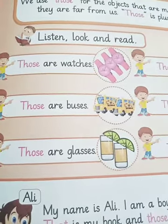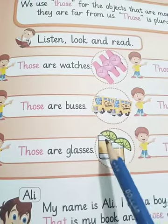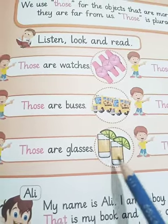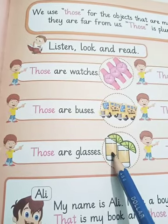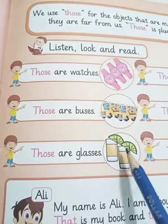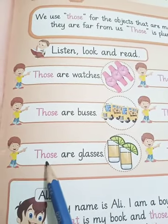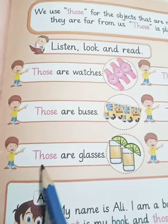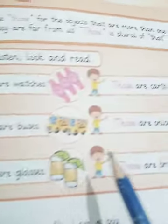Now see which picture is this — glasses. How many glasses are there? Two. Two glasses means plural. Are the glasses near to the boy or far from the boy? Glasses are far from the boy, so the boy is saying: 'Those are glasses.'